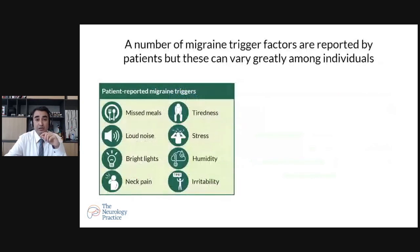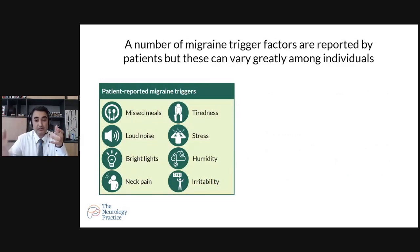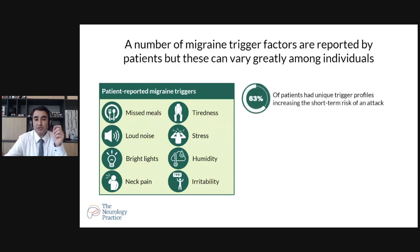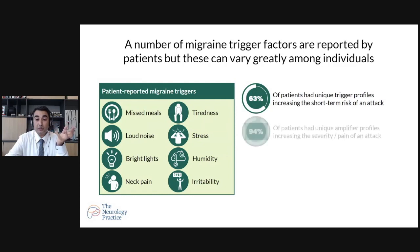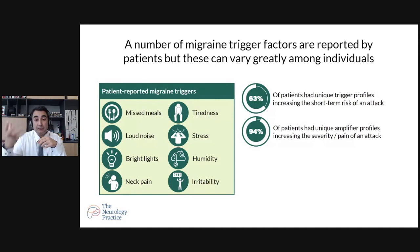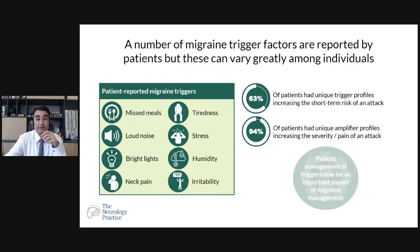Migraine triggers vary patient to patient. They can include missed meals, loud noise, bright lights, neck pain, tiredness, stress, humidity, and hot weather. Irritability also can be a trigger. 63% of patients actually have a unique trigger profile. These triggers can also act as amplifiers — 94% of patients report loud sound and bright light as amplification factors for their migraine.